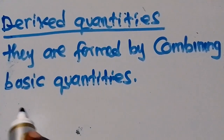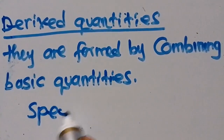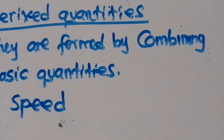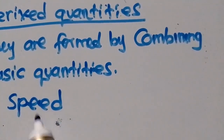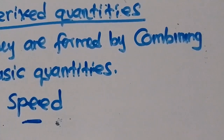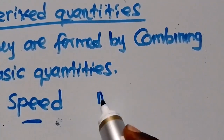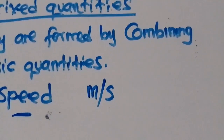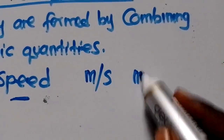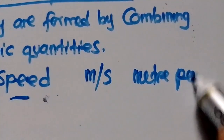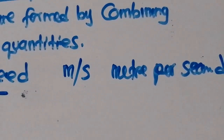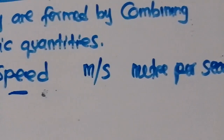An example is speed. Speed is a derived quantity because it is formed by combining distance and time. So whenever we are talking about speed, the SI symbol is meters per second. In words: meters per second. This is how we write it.